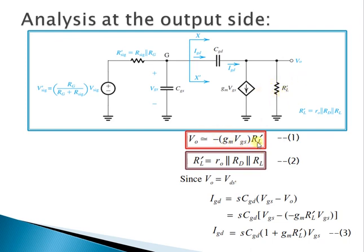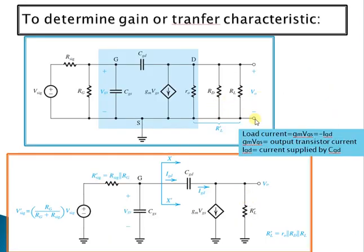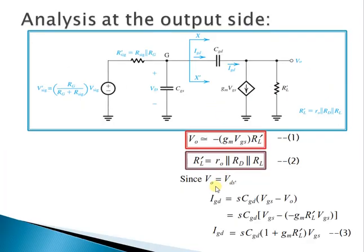The output voltage is computed as minus GM×VGS×RL_dash, where RL_dash is the parallel combination of R0, RD, and RL. Since this is a common source amplifier, Vout equals VDS. Therefore IGD equals S×CGD×(VGS − V0), and substituting V0 = −GM×VGS×RL_dash gives equation 3.